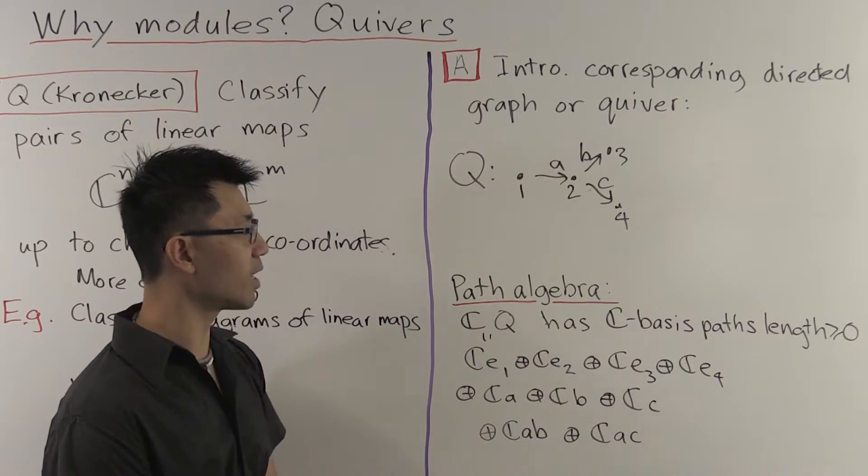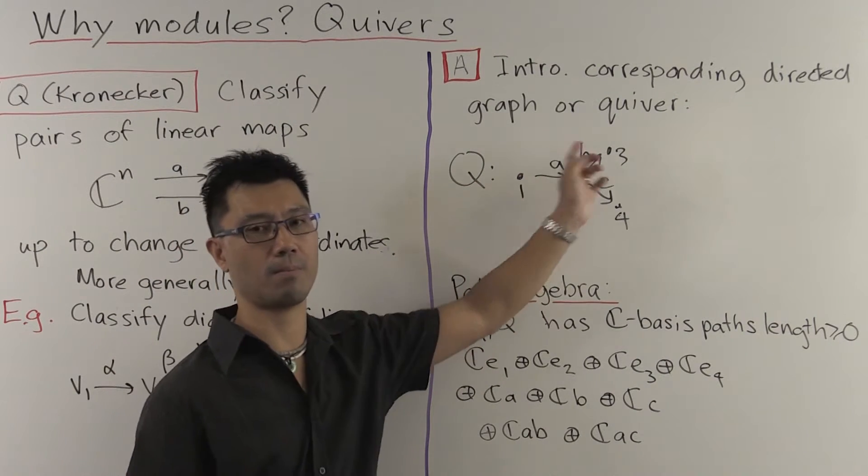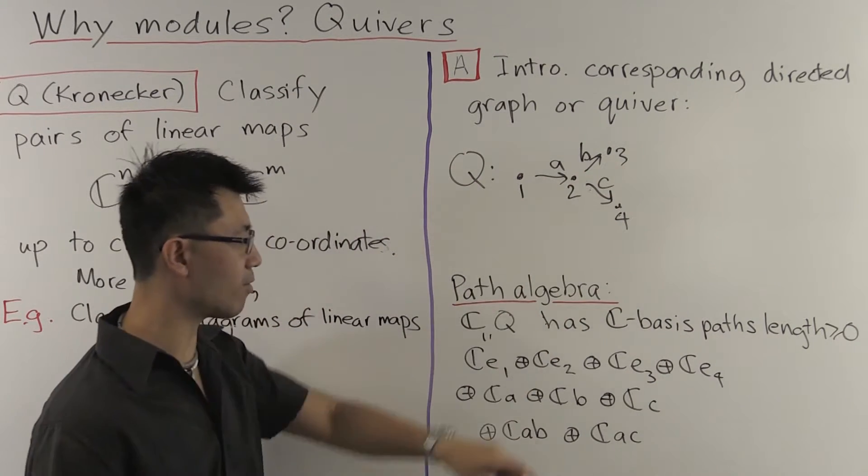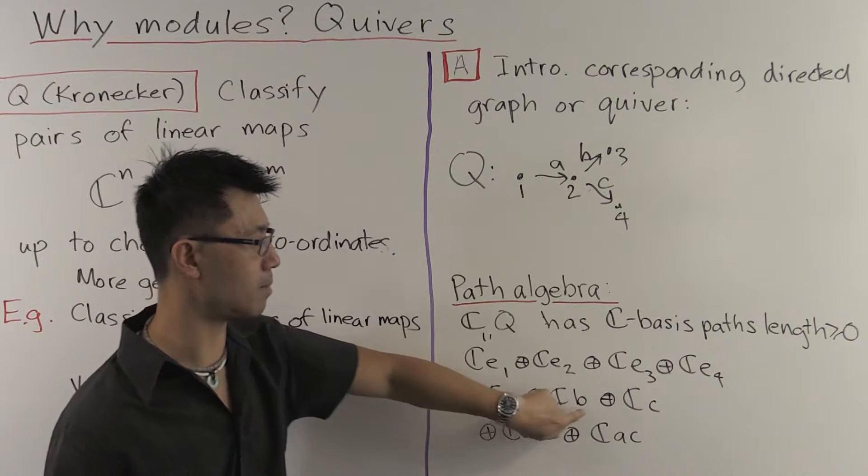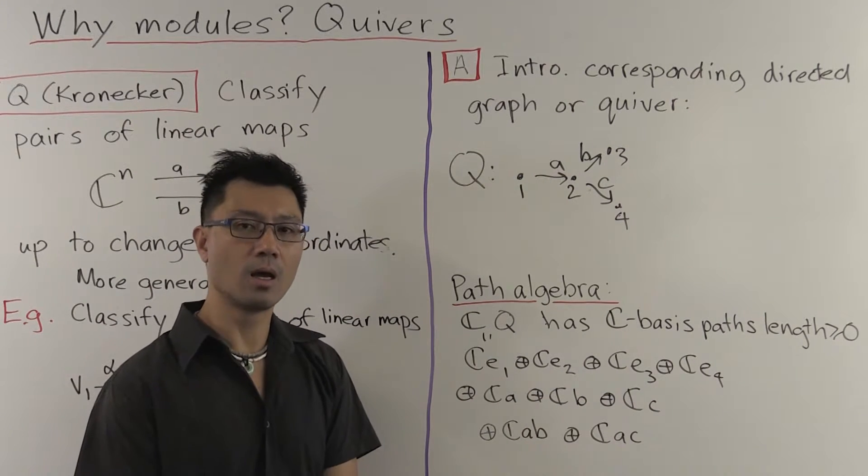For the paths of length 1, you just have the directed edges, A, B, and C. So we have three more basis vectors, A, B, and C.